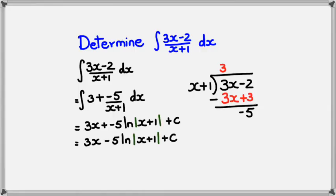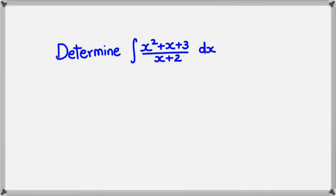So simplifying this we would have 3x minus 5 ln of x plus 1 plus c. Anytime you see a rational function, the first thing you might want to do is see if you can actually cancel out or simplify it. If you can't simplify it, then use long division to separate it into a quotient and a remainder.